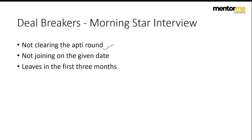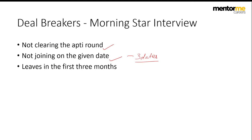Now let's look at deal breakers. The first is obviously not clearing the aptitude round. Even if you're intelligent, I'd still recommend practicing these questions because you may not have encountered this type before. The biggest deal breaker even after the aptitude round is not being available to join on a specific date. They generally give you about three dates to join, and you must be absolutely compliant — since they hire in bulk, the training and induction process requires candidates to join on specific dates.